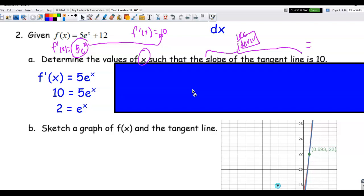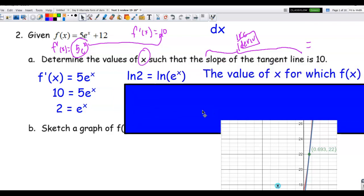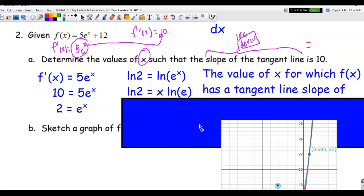Now think back to your Algebra 2 days. To undo e, we're going to take the ln of both sides. So I have the ln of 2 on the left side, and the ln of e to the x on the right side. And e and ln undo each other. I'm not going to say cancel, e and ln undo each other, and that leaves me with x.